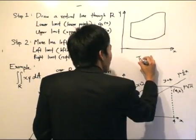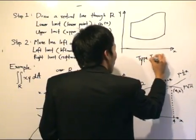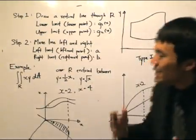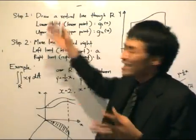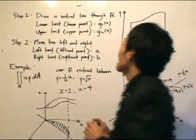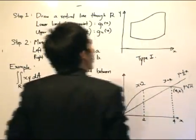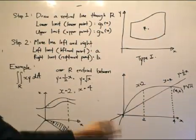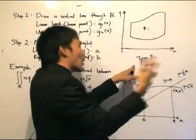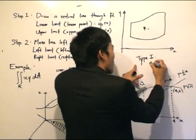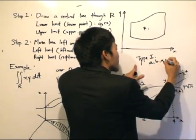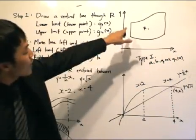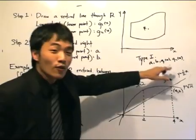We're going to tackle type 1 first, then after that we go through type 2. Here's the step — if you can get this algorithm down, it's just two steps, and you should have no problem at all. The region R is over here, and we want to find a way to specify that. Since it's type 1, we can anticipate A and B, and G1(X) and G2(X). We are trying to specify the region R in terms of these quantities.